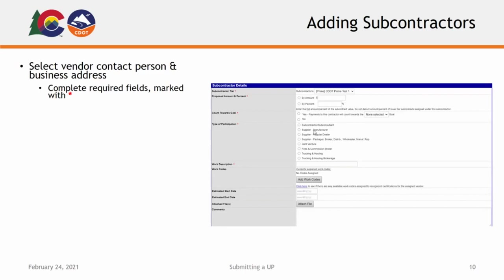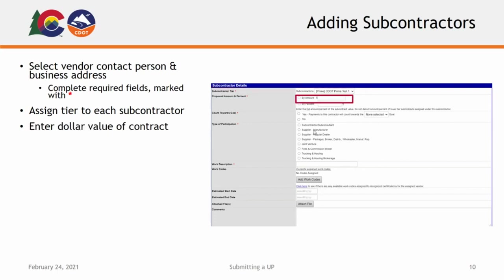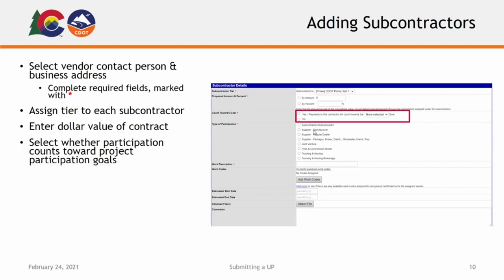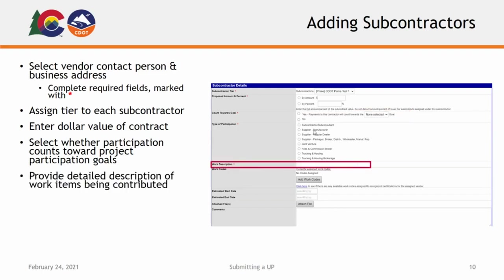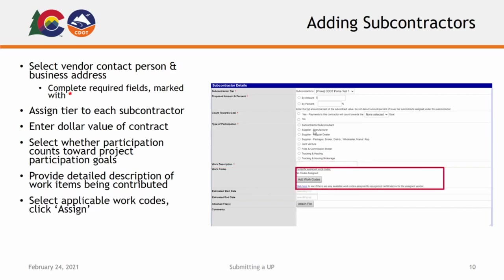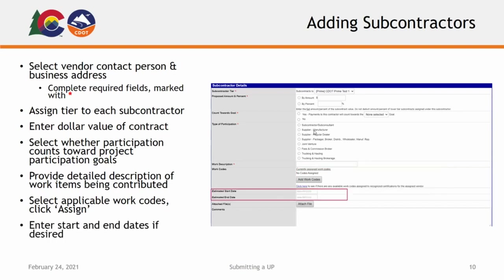On the following page, you will need to select the vendor contact person and business address from the drop-down menus. Then, you will complete all fields marked with a red asterisk. In the Subcontractor Tier field, ensure that you assign the appropriate tier to each subcontractor — a subcontractor's tier relates to which party hired them. The Proposed Amount and Percent field is where you will enter the dollar value of the subcontract. In the Count Toward Goal field, you will select whether the subcontractor's participation will count towards the contract's compliance goals, and you will select DBE as the goal. Please remember, if a subcontractor is to be counted toward a goal, they must already possess all qualifying certifications. When completing the Work Description field, please be as detailed as possible to provide anyone viewing the plan the best idea of this subcontractor's work contribution to the project. In the Work Codes field, certified firms will see a list of accepted work codes for the project. You must select all applicable work codes for the subcontractor and click Assign. The projected start and end date fields are recommended to complete, but are not required.